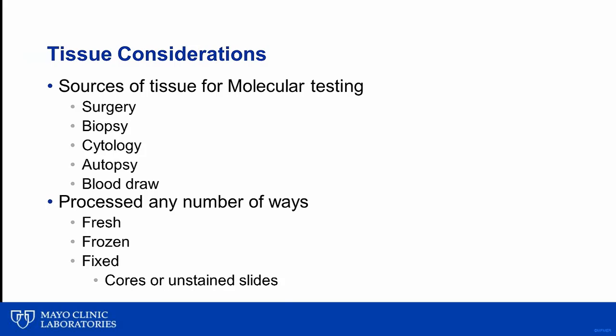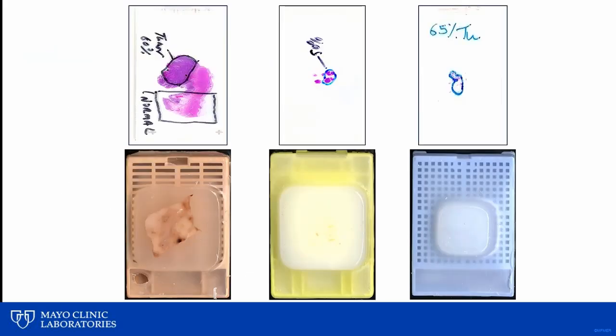A number of fixatives and fixation protocols are routinely used and are also variables that need to be considered. Once tissue is fixed, there is more than one way to get nucleic acid from a tissue block — for example, taking cores from the block or scraping from unstained slides. This slide highlights the variability in the amount of tissue that may be available, ranging from large tissues from resection specimens to different size biopsies. Once the tissue is in this format, the molecular workflow really begins.